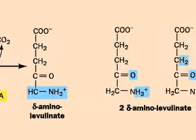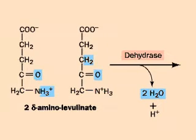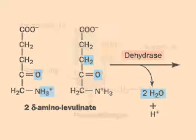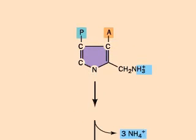Two molecules of delta-aminolevulinate condense to make porphobilinogen. Porphobilinogen is a molecule containing a pyrrole ring with two side chains: an acetate group A and a propionate group P.